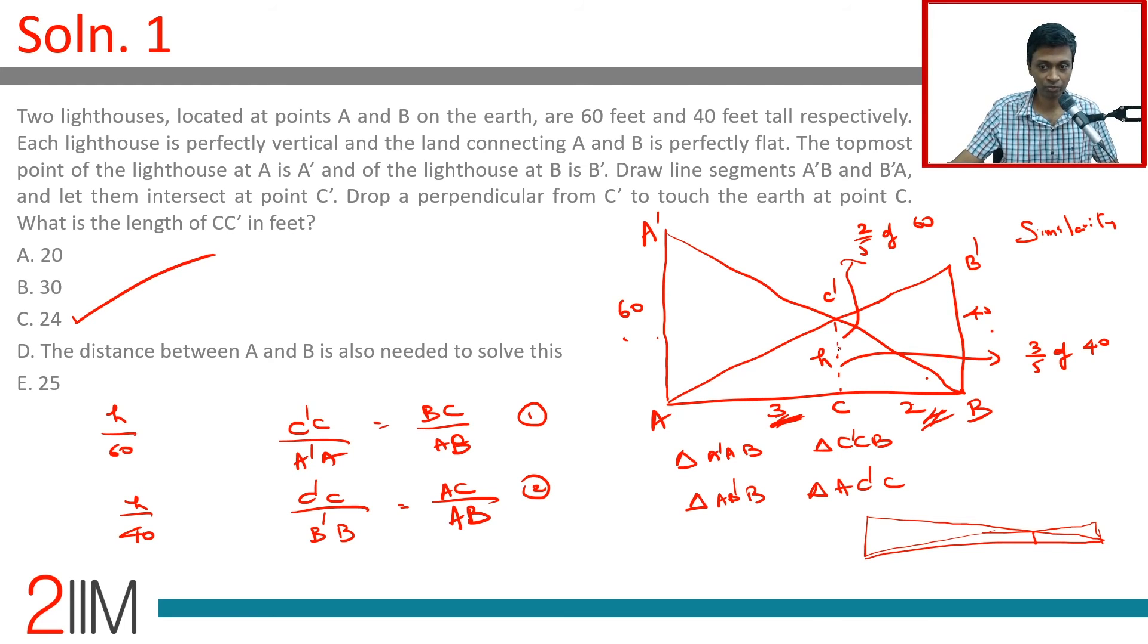Call this as h, call this as h1, h2. This ratio will be h1 is to h2, so this height will be h1 times h2 by h1 plus h2. h1 h2 by h1 plus h2. 60 into 40 by 60 plus 40, 2400 by 100, 24. That's what we would have derived it as if you plugged in the formula. We are now looking to simplify it and derive it using similarity. That's better when you're doing it. Do it using similarity. In the exam context, after you've derived the formula, just plug it in, get it right.